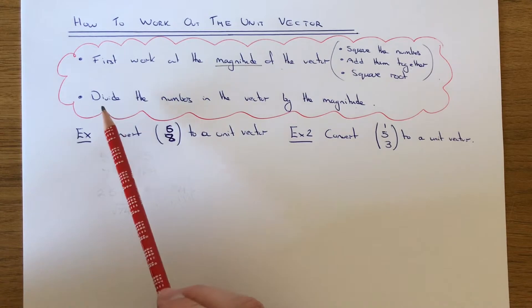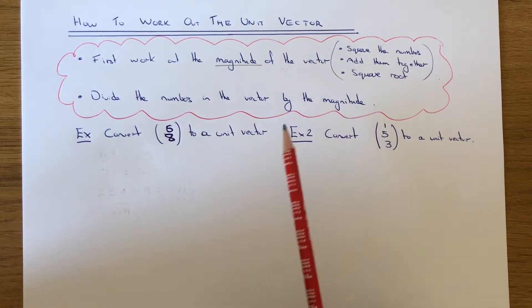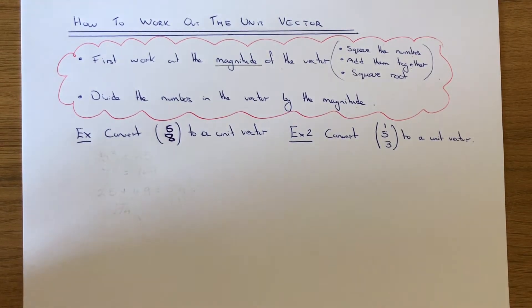And then once you have the magnitude, you can divide all the numbers in the vector by this answer that you've just worked out. The unit vector will give you a vector with a length of 1 and it will keep the vector in the same direction as the original one.